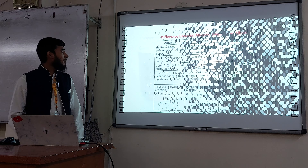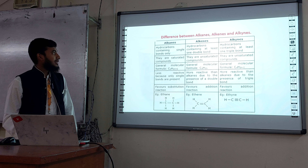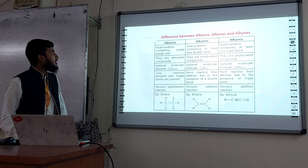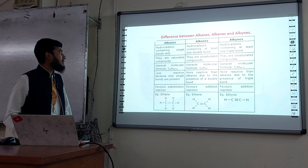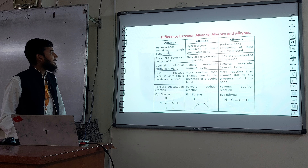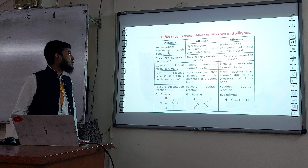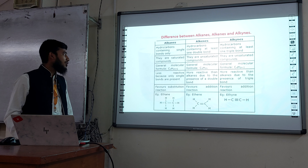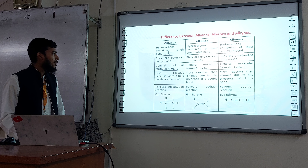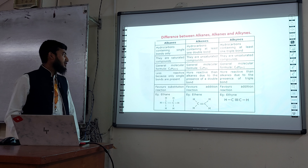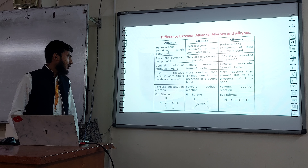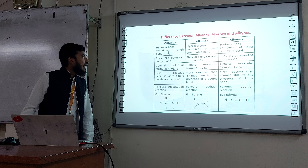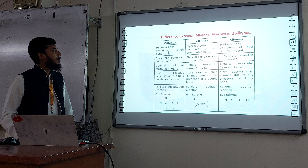Now talking about the differences. Alkanes are hydrocarbons containing single bonds only. They are saturated compounds. The general molecular formula is CnH2n+2. They are less reactive because only single bonds are present. They undergo substitution reactions. Example: ethane.